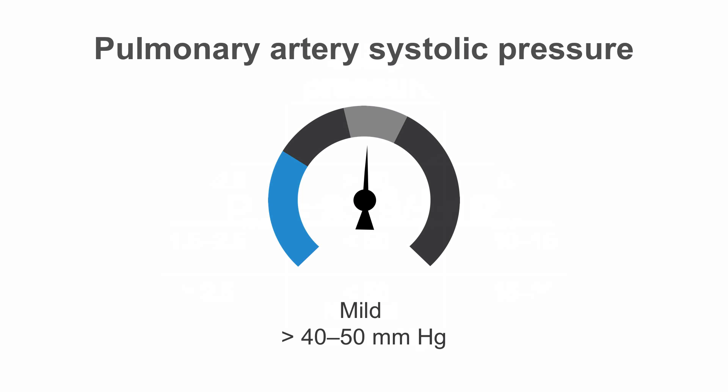Between 40 and 50 millimeters of mercury is considered a mild elevation. Anything greater than 50 millimeters of mercury is considered moderate elevation. And greater than 60 is considered severe. In our example, the pressure was 43.9 millimeters of mercury, or could be as high as 48.9 if we use the higher estimate for the right atrial pressure. This corresponds to a mild elevation of the pulmonary artery systolic pressure.